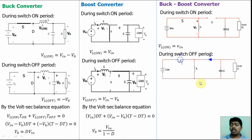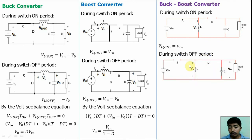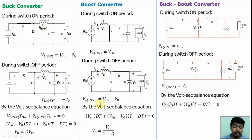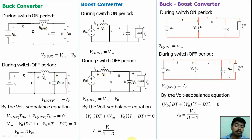Applying the volt-second balance equation: VL(on)·D·T + VL(off)·(1−D)·T = 0, where VL(on) = Vin and VL(off) = −V₀. Simplifying, we get V₀ = Vin·D / (1−D), or equivalently Vin / ((1/D)−1). To compare: if average output voltage V₀ = Vin / (1−D), this is a boost converter. If average output voltage V₀ = Vin·D / (1−D) — equivalently Vin / (1/D − 1) — this is a buck-boost converter.